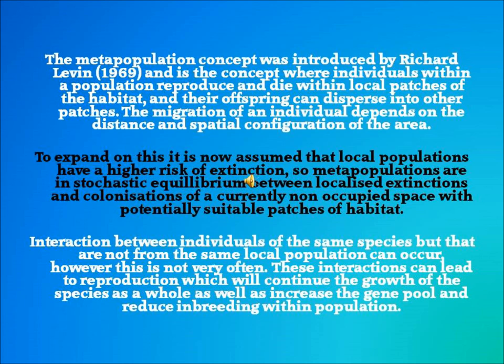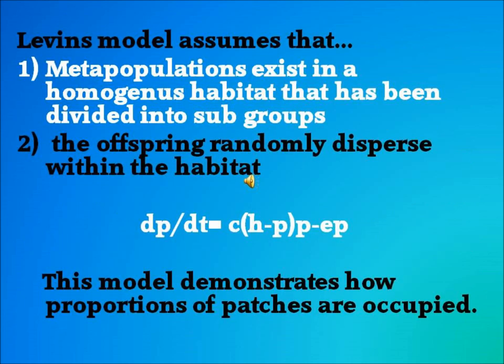These interactions can lead to reproduction which will continue the growth of the species as a whole as well as increase the gene pool and reduce inbreeding within the population. Levin's model assumes that metapopulations exist in a homogenous habitat that has been divided into subgroups and that the offspring randomly disperse within the habitat. This model demonstrates how proportions of patches are occupied.